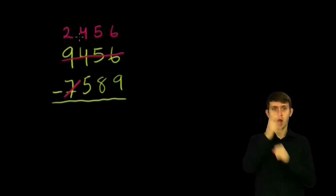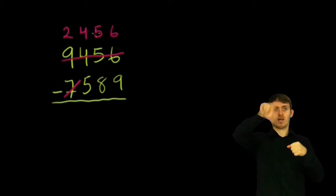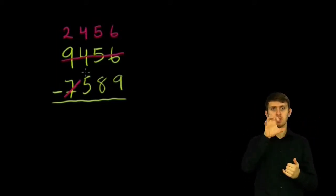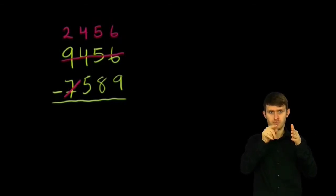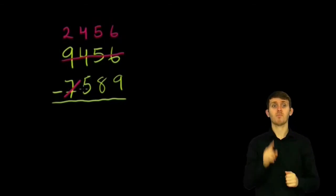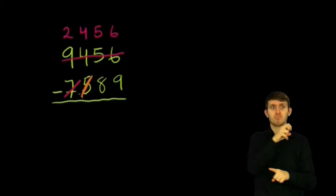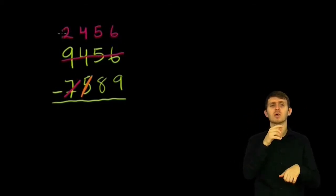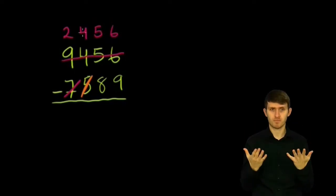Now, if I want to do 2,456 minus 589, what I do is I subtract 500 from both of these numbers. So if I subtract 500 from this bottom number, this 5 will go away, and if I subtract 500 from this top number, what happens? What's 2,456 minus 500?